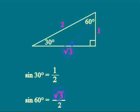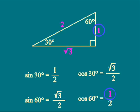On to the cosines. Cosine is adjacent over hypotenuse. The adjacent side of the 30 degree angle is square root of 3. The hypotenuse is 2. That means cosine of 30 degrees equals square root of 3 over 2. The adjacent side of the 60 degree angle is 1. Hypotenuse is 2. That means cosine of 60 degrees is 1 over 2. Here's a summary of our results.